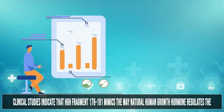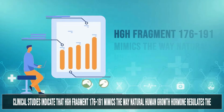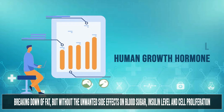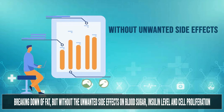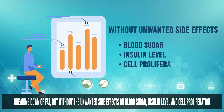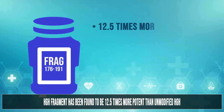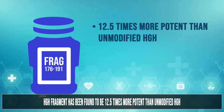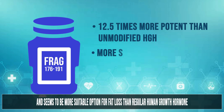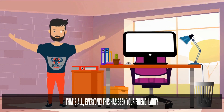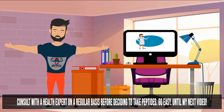Clinical studies indicate that HGH Fragment 176-191 mimics the way natural human growth hormone regulates the breaking down of fat, but without the unwanted side effects on blood sugar, insulin level, and cell proliferation. HGH fragment has been found to be 12.5 times more potent than unmodified HGH and seems to be a more suitable option for fat loss than regular human growth hormone.